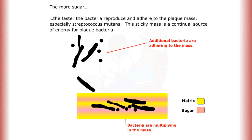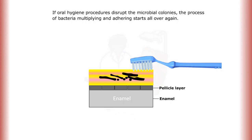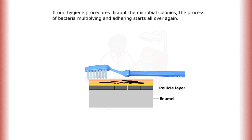The more sugar, the faster the bacteria reproduce and adhere to the plaque mass, especially Streptococcus mutans. This sticky mass is a continual source of energy for plaque bacteria.